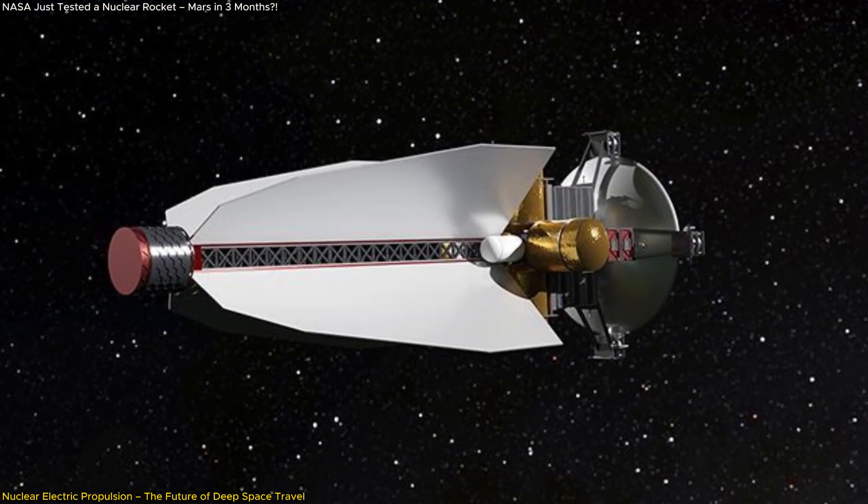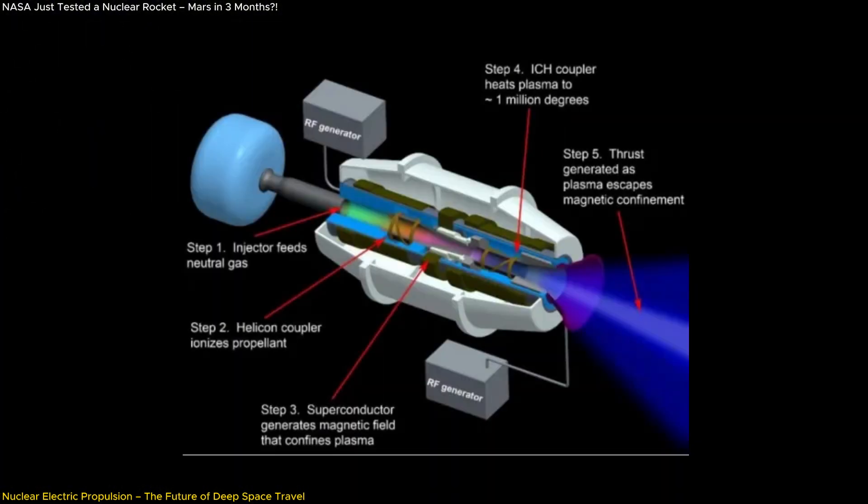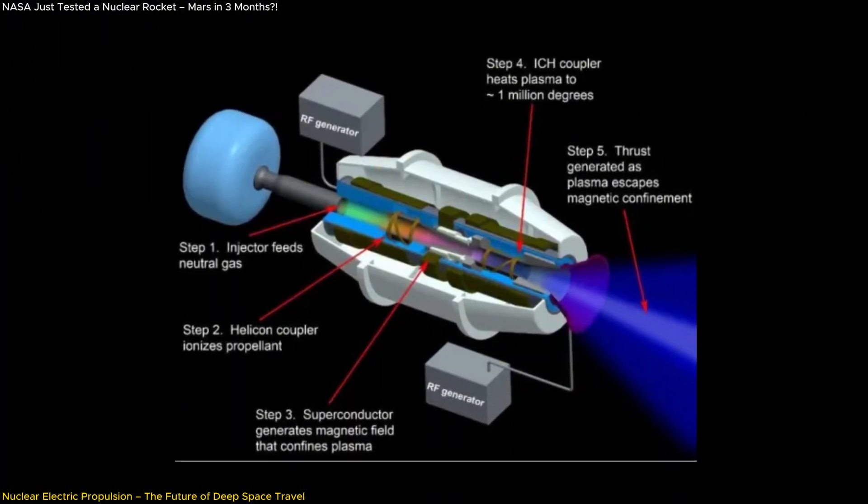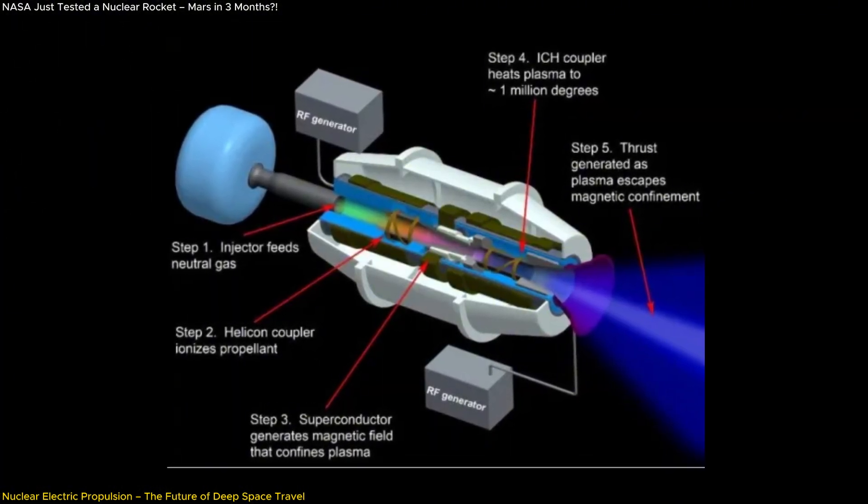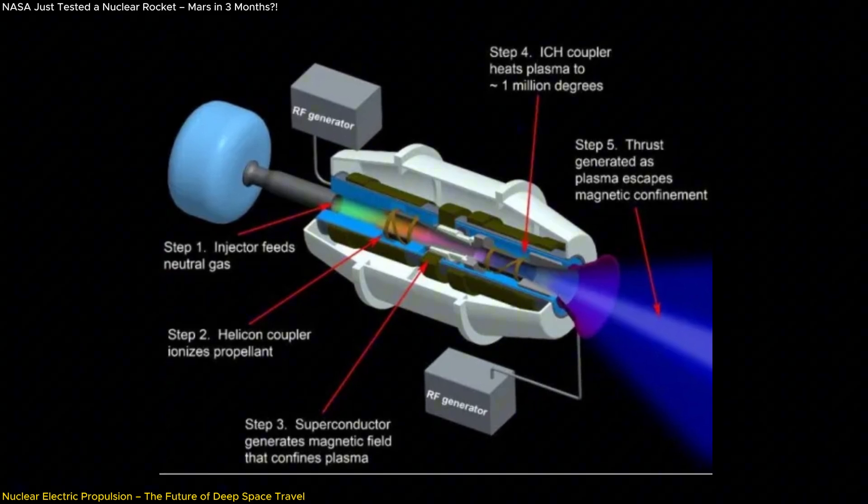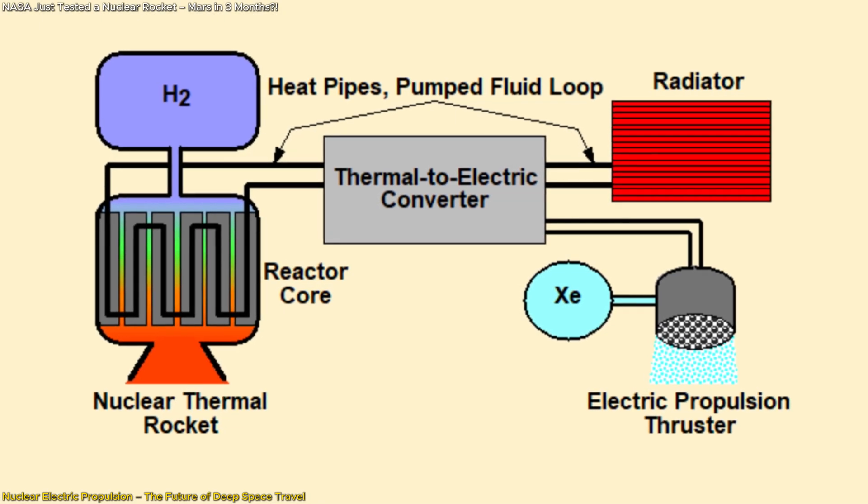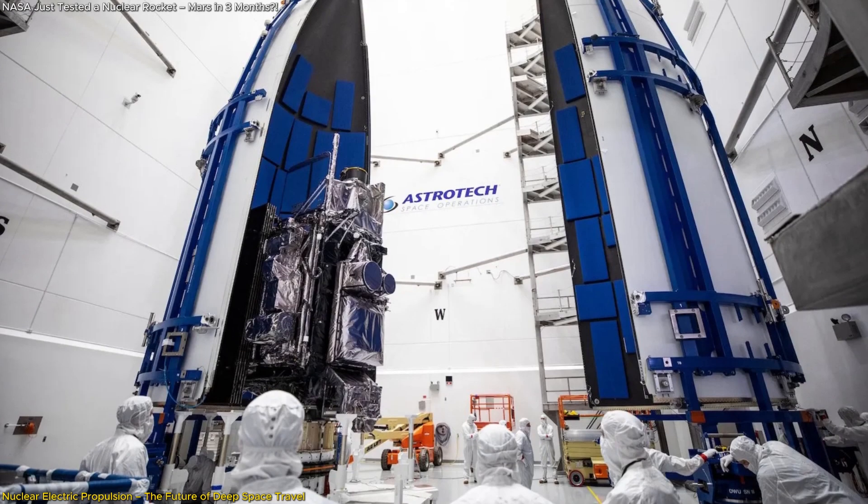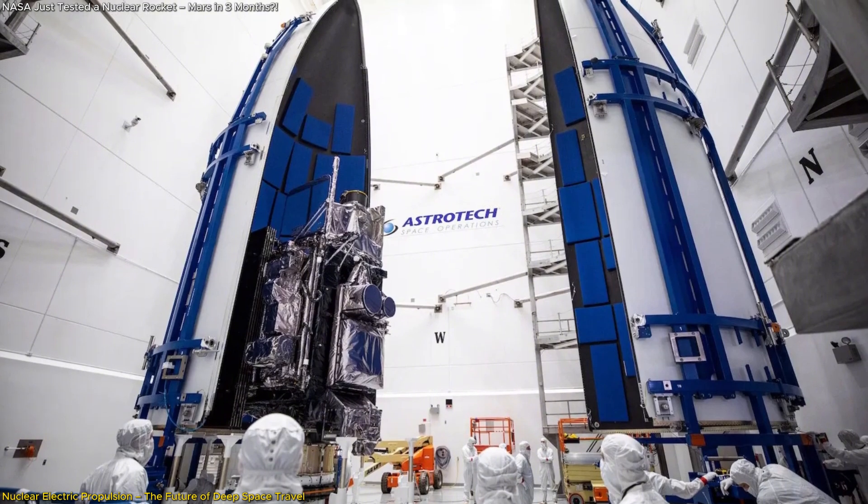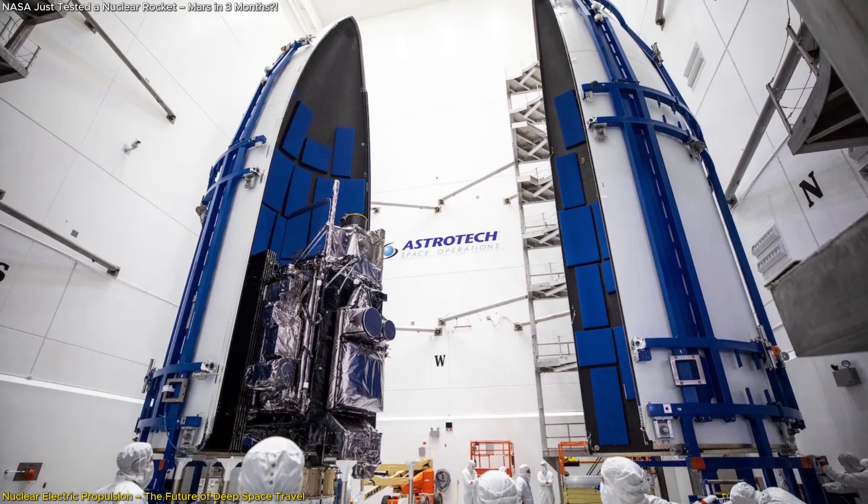One of the biggest challenges with NEP is heat management. A nuclear reactor generates intense heat, which must be dissipated efficiently to keep the system stable. Traditional radiator systems are massive, requiring them to be folded up into a rocket fairing for launch, which limits their size and effectiveness.